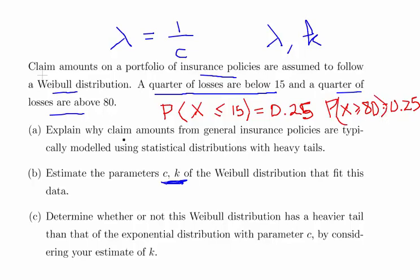Explain why claim amounts from general insurance policies are typically modeled using statistical distributions with heavy tails. Estimate C and K for this particular example here with 15 and 80 as our quartiles.